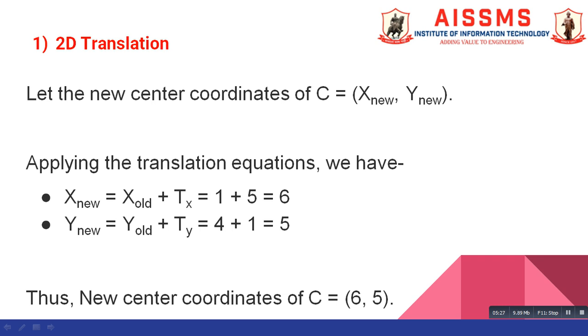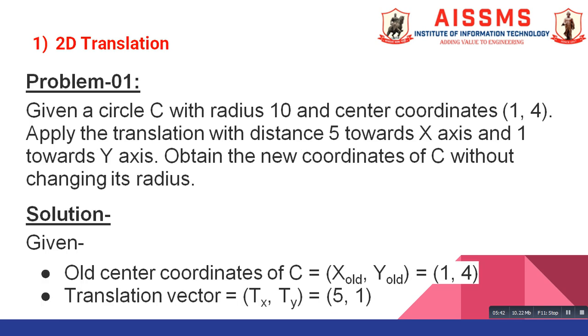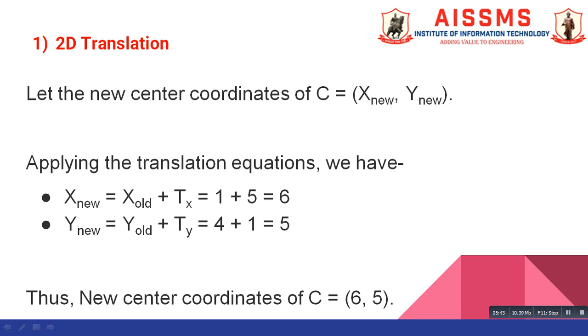Similarly, standard formula to calculate Y new is Y old plus TY. Value of Y old and TY is given to us in our problem statement. Value of Y old is 4 and value of TY is 1. So, after adding these two values, we get 5. Thus, new center coordinates of C are 6 and 5.